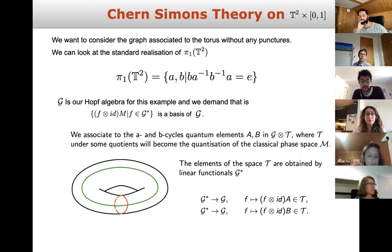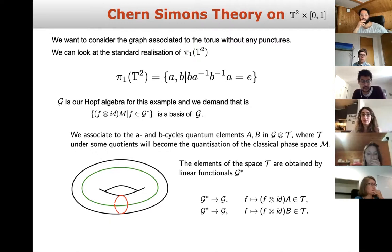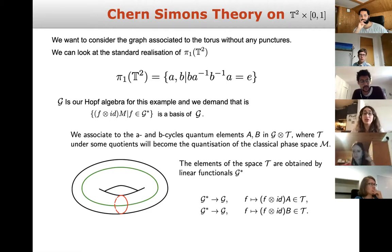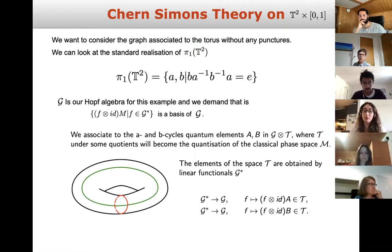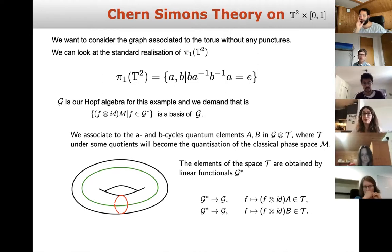On the torus, we look at the first homotopy group. There are two loops, a and b, with the relation that starting from loop b and going through a⁻¹b⁻¹a gives the trivial element e. From now on in this example, our Hopf algebra is denoted G. We associate the a and b cycles to quantum elements — capital A and capital B — and we try to understand the relations that A and B satisfy.